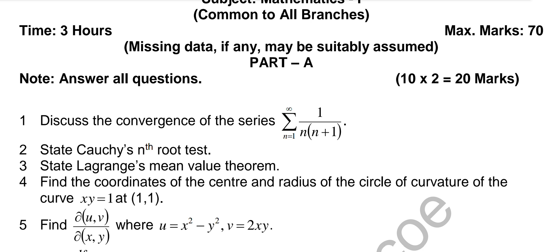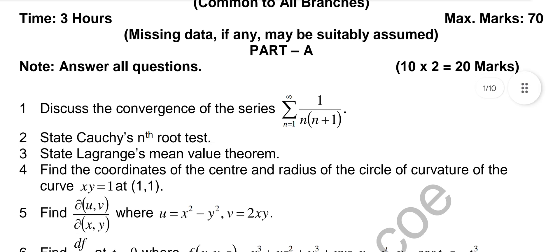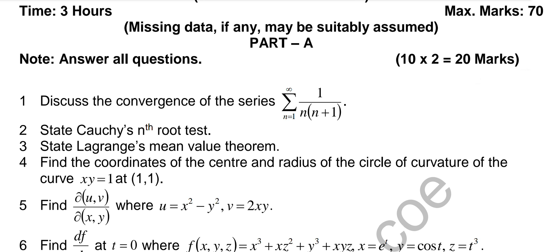Coming to the second unit, he's asking: state Lagrange's Mean Value Theorem. For mean value theorems we have three: Rolle's Mean Value Theorem, Lagrange's Mean Value Theorem, and Cauchy's Mean Value Theorem. Taylor series expansion is also there. So the definition of Lagrange's Mean Value Theorem is asked here. Then the fourth question asks for the coordinates of the center of curvature and the radius of the circle of curvature.